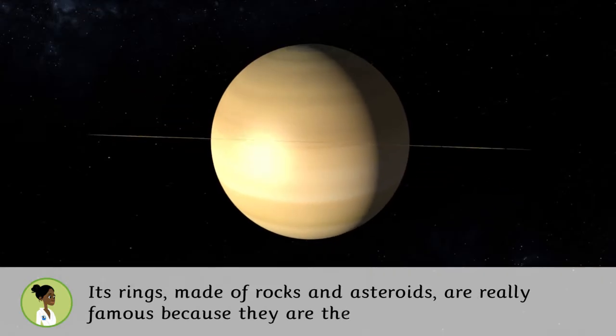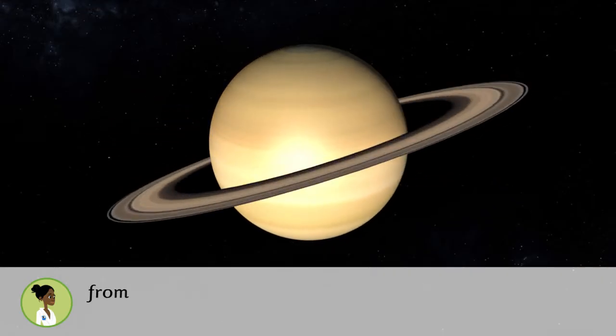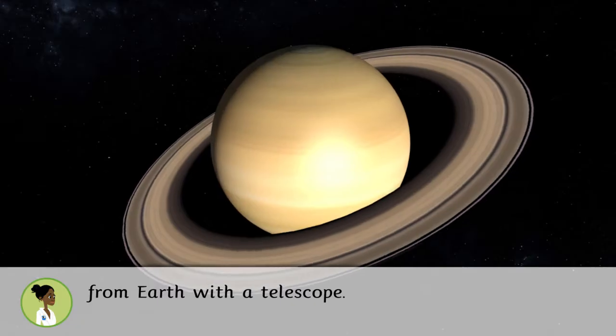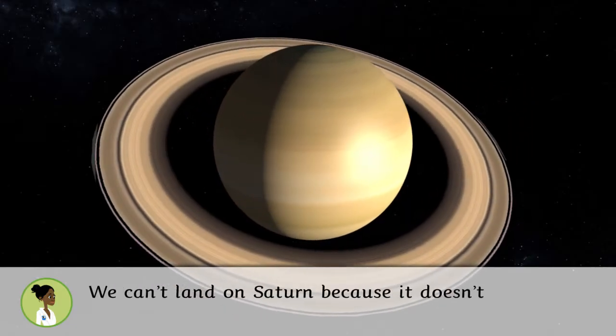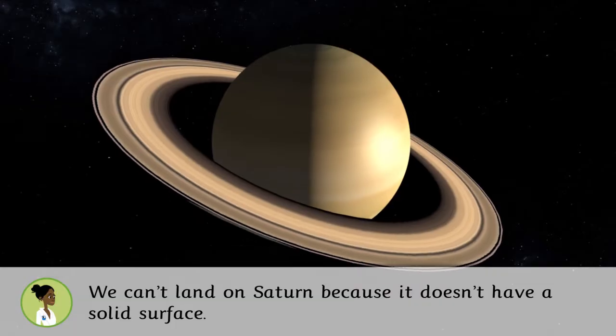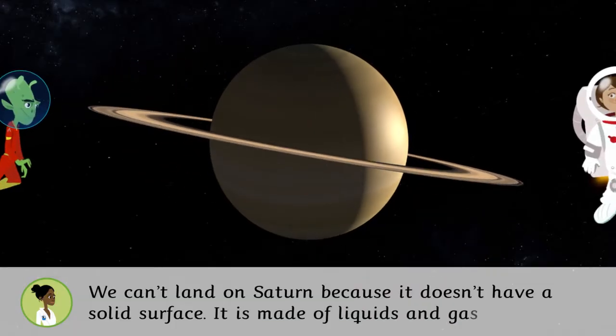They are the only ones you can see from Earth with a telescope. We can't land on Saturn because it doesn't have a solid surface. It is made of liquids and gases.